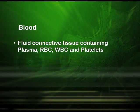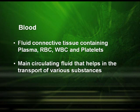Blood is the next type of connective tissue. It is a fluid connective tissue consisting of plasma, RBC, WBC, and platelets. It is the main circulating fluid that helps in the transport of various substances.